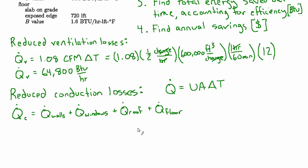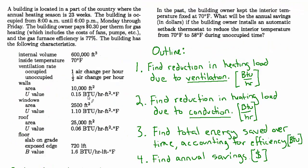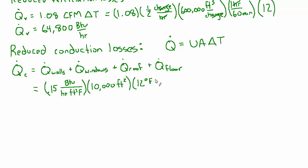For the walls: U is 0.15 BTU per hour per foot squared per degree F, area is 10,000 square feet, and delta T is 12 degrees Fahrenheit. Degrees Fahrenheit and square feet cancel, leaving BTUs per hour. For the windows: U is 1.1 — much higher than walls because insulation properties of a window are far less — area is 2,500 square feet, and delta T is 12. For the roof: U is 0.06 — much lower, better insulated — with much more area and delta T of 12.